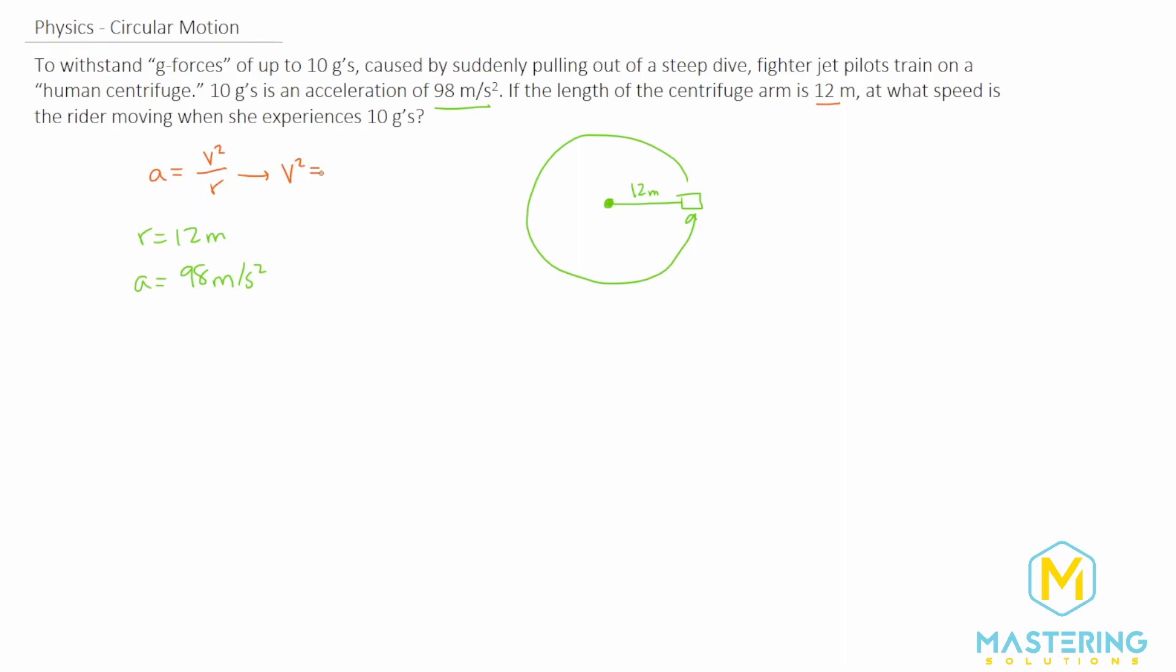So v squared is equal to acceleration times the radius, and then we'll take the square root. So velocity is equal to the square root of the acceleration times the radius.